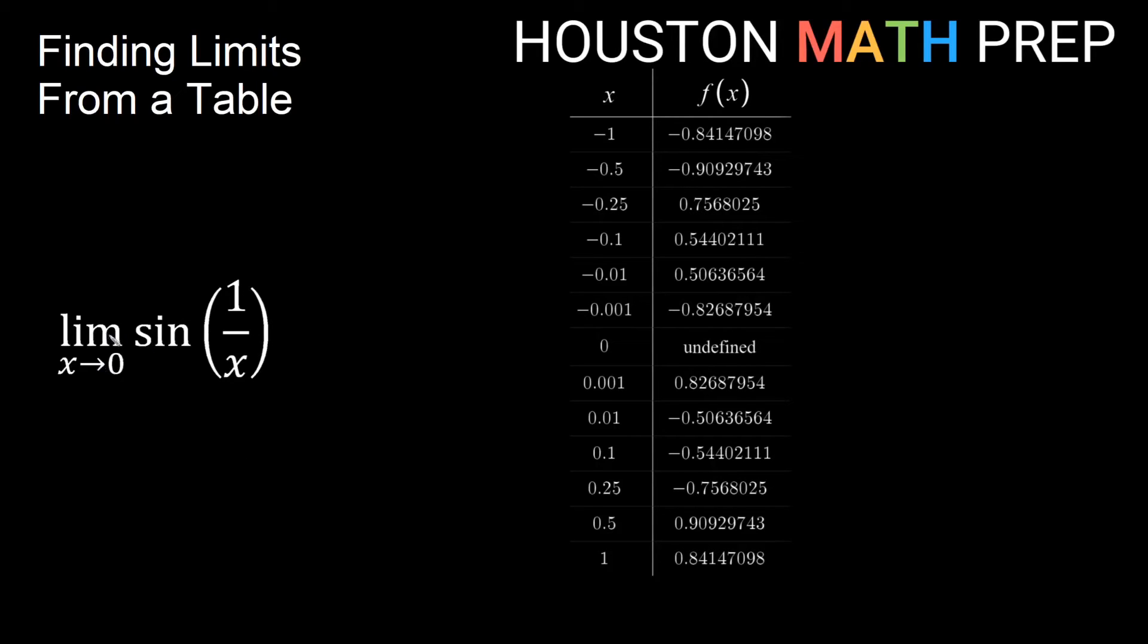For our last example here, we want to look at the limit as x approaches 0 of sine of 1 over x, different than sine of x over x that we looked at earlier. So as I approach 0 from the negative direction, from the left side, getting negative x values that get closer and closer to 0, you can sort of see we don't have all positive or all negative. I have some negative values here, and then I become positive, and then I get less positive, and then I jump back to a negative value here. So it's really kind of hard to tell what's going on there.